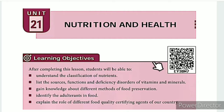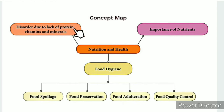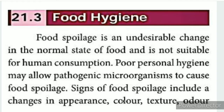These are your learning objectives. The QR code and ICT corner links are in the description box below — don't miss them. This unit's video link is also in the description box. The concept map for nutrition and health covers 6 topics in this lesson: first, importance of nutrients; second, disorders due to lack of protein, vitamins and minerals; third, food hygiene; fourth, food preservation — which we will cover today, as both topics relate to food spoilage; fifth, food adulteration; and sixth, food quality control.